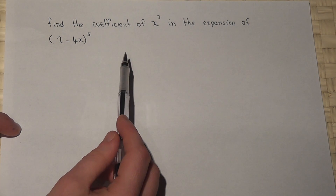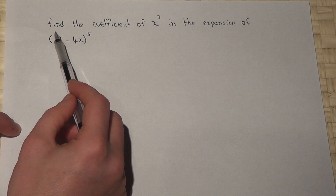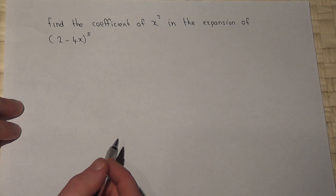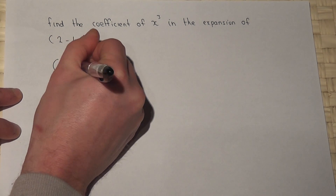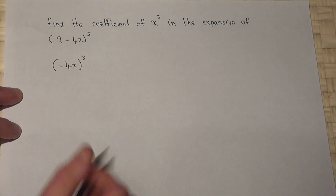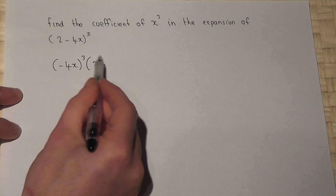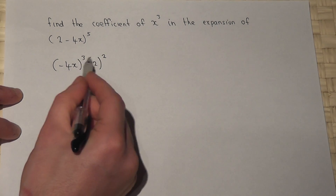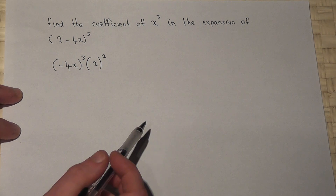In this question we want to find the coefficient of x cubed — in other words, the x cubed term — if we expand this bracket to the power of 5. The shortcut is as follows: since I want an x cubed, the term with the x must be raised to the power of 3. There is also a 2 here, and that 2 must be raised to the power which adds to make 5. So we have a power of 3 and we also need a power of 2, because 3 plus 2 is 5 — the two powers always add to give the overall power.